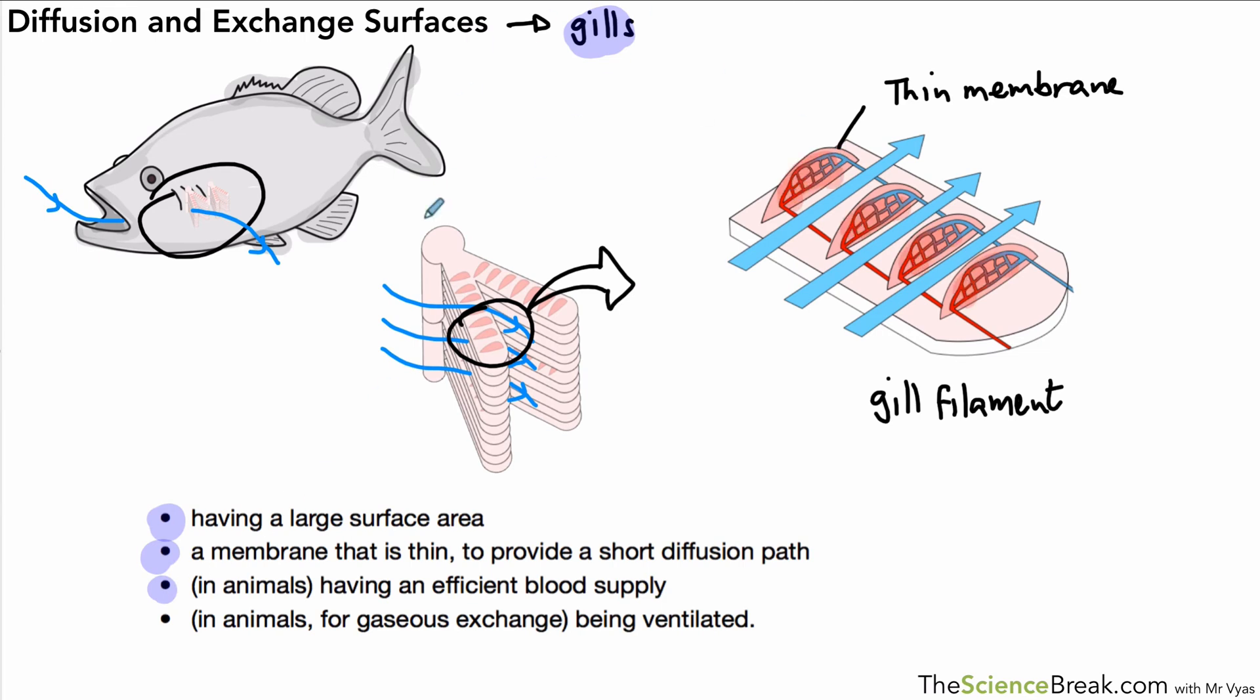We have an excellent blood supply there as you can see, those blood capillaries, and we kind of have a ventilation system here because water goes in and flows over the gills. Some fish will actually gulp water to allow water to flow over the gills so they can extract the oxygen and remove carbon dioxide from the blood.